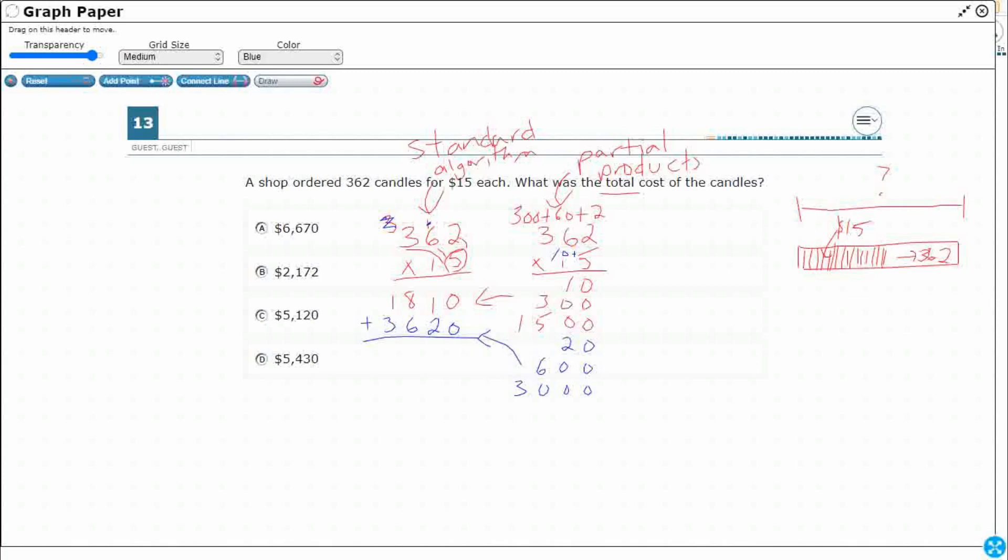So they both end the same way. Just a lot more adding to do on the backend if I don't use the standard algorithm, but I'm going to get 5,430. My answer is D.